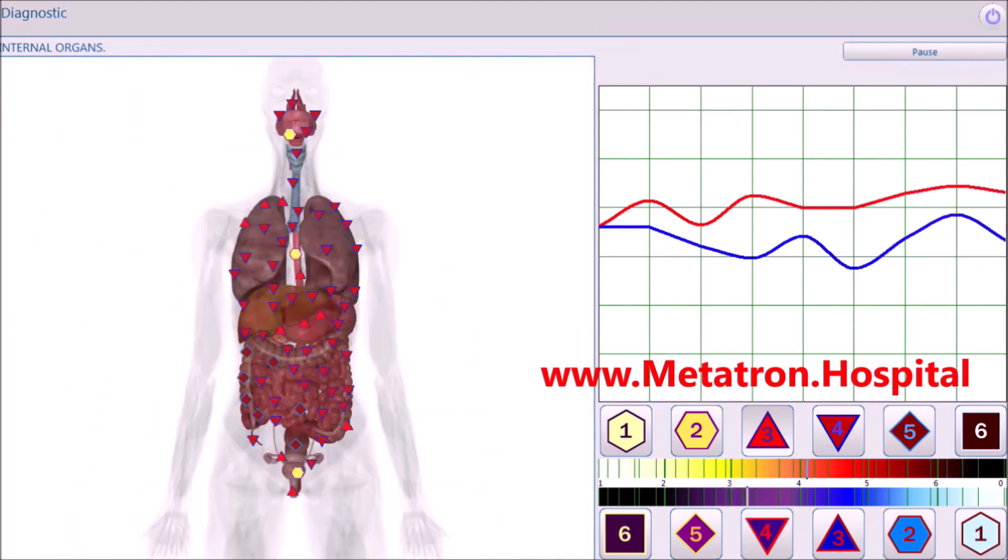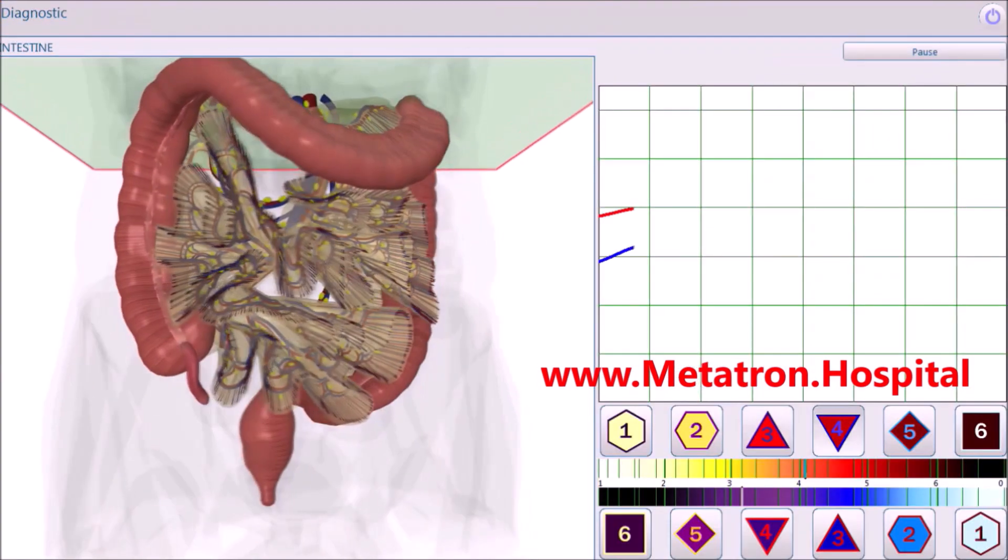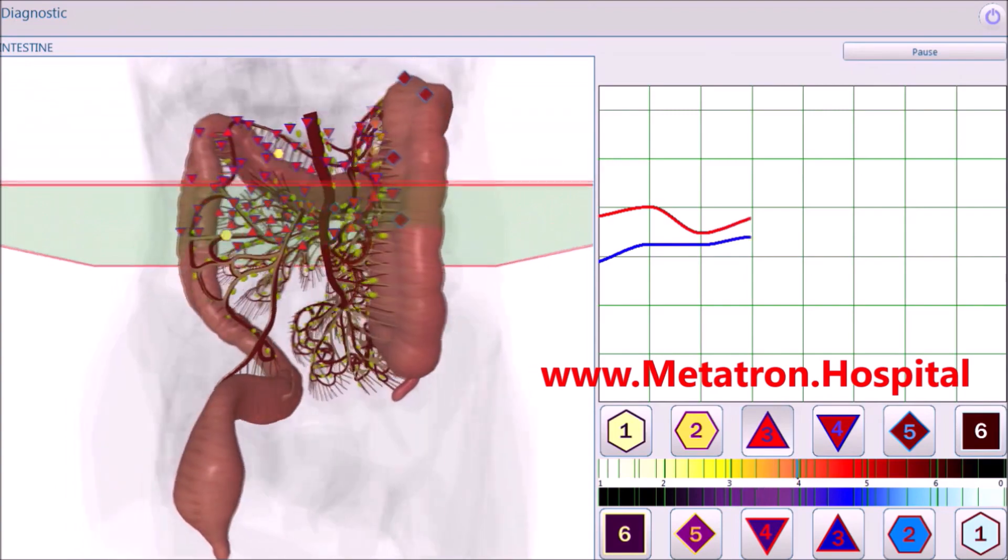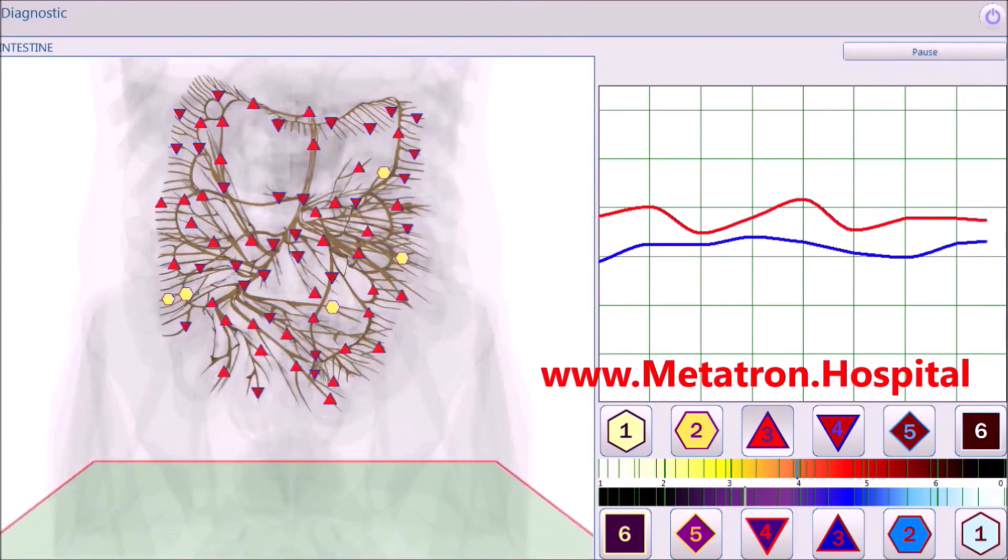Distance treatment is especially ideal as a general support 2 to 3 times a week. A remote treatment session is usually shorter, around 30 minutes. During one session, 3 to 5 organs, body parts, or 1 to 2 systems can be treated.